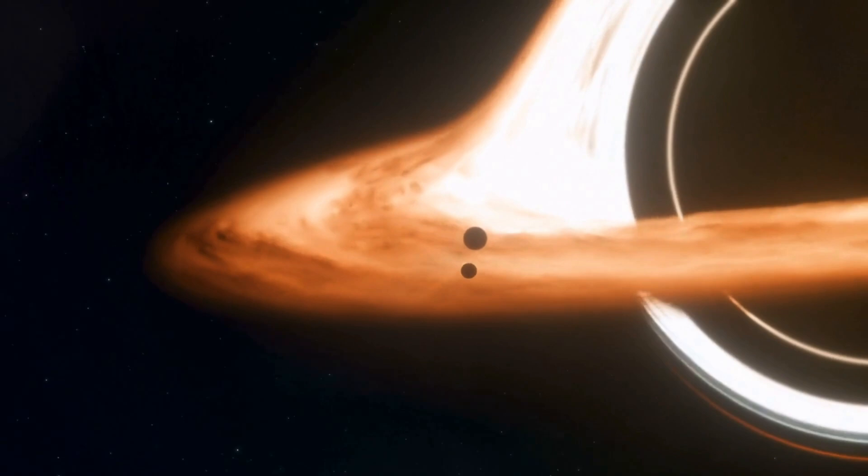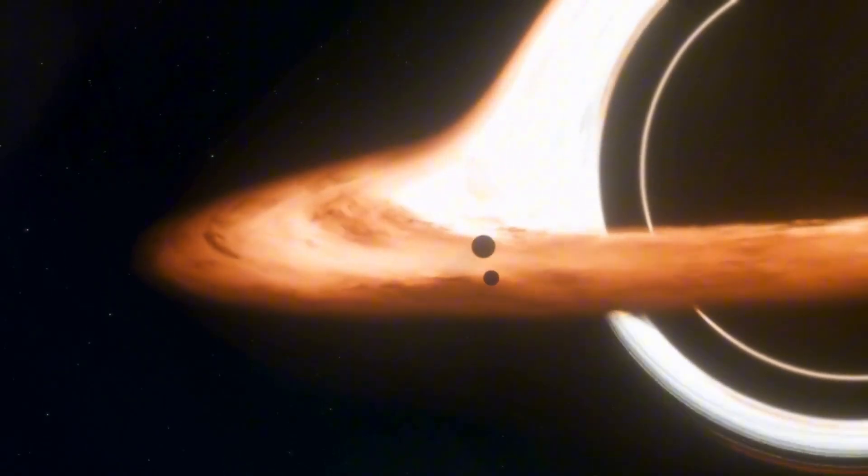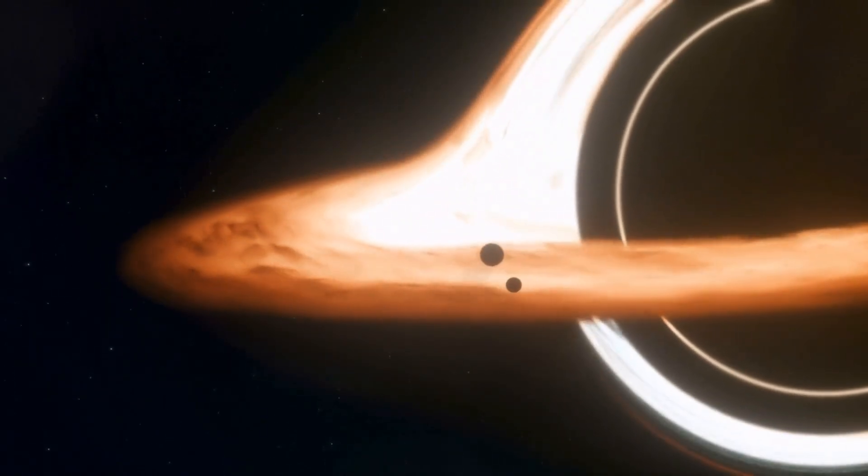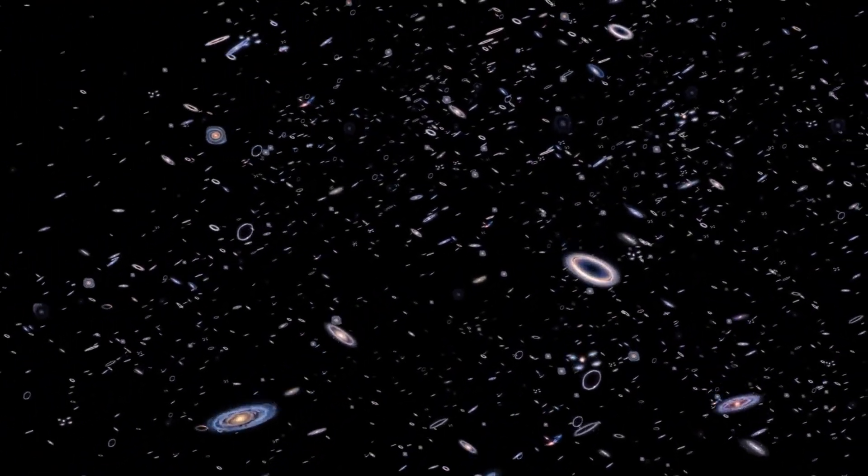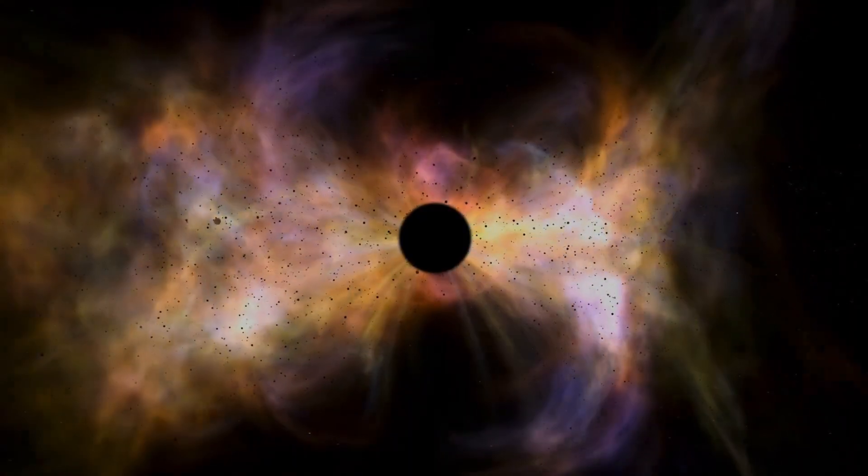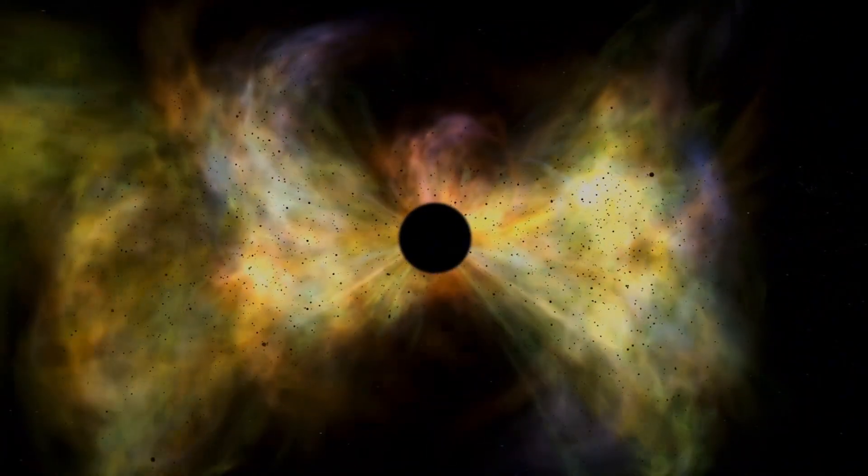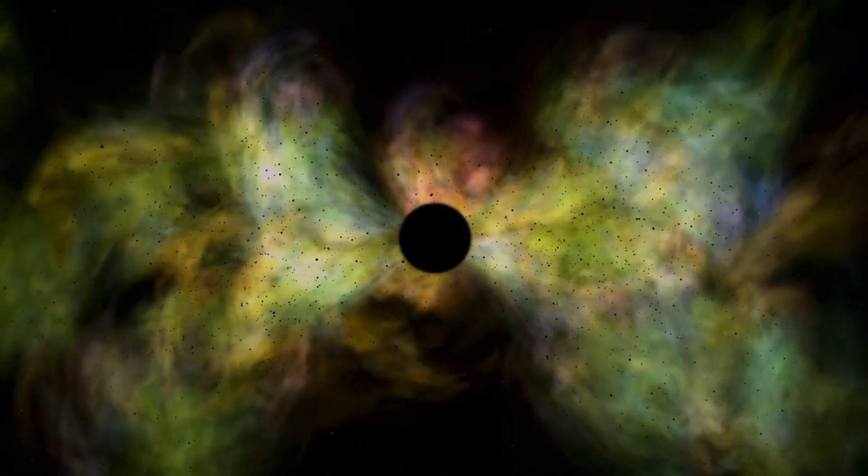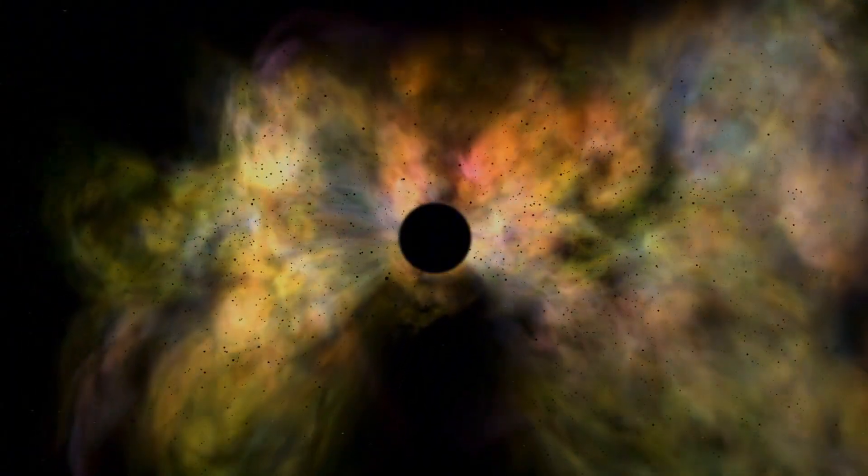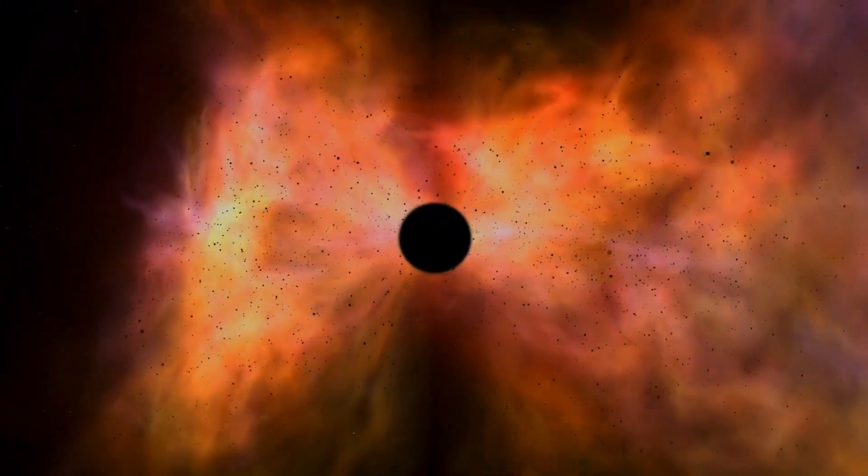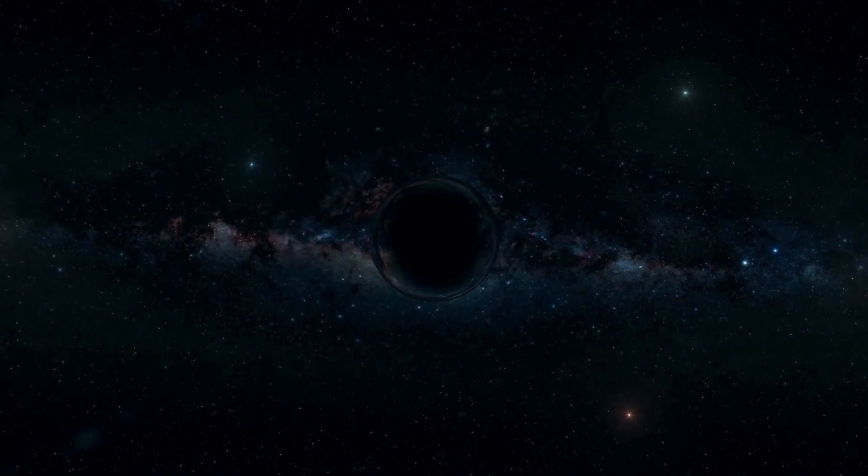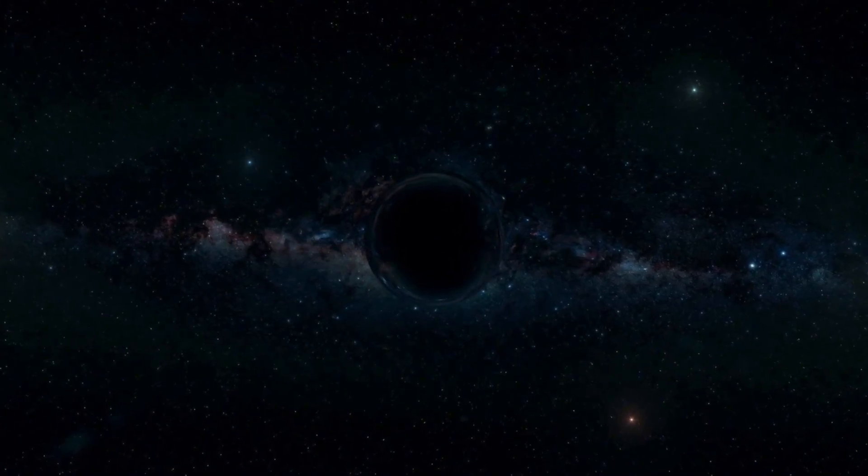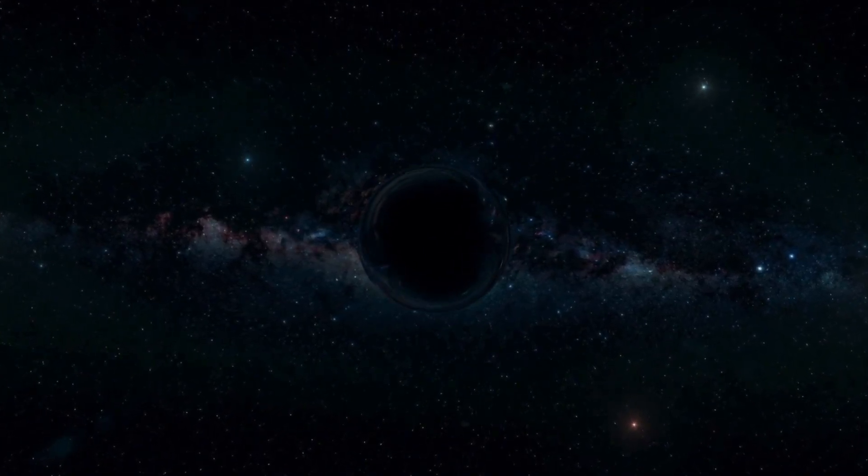If the black hole that created our universe had angular momentum, meaning it was spinning, then it could have passed on that spin to the matter inside it, influencing how galaxies formed and rotated. This discovery adds weight to the idea that our universe could exist within a black hole in a larger parent universe. Each black hole in that cosmos could be the seed of a new universe like ours, and each of those universes might spawn even more.